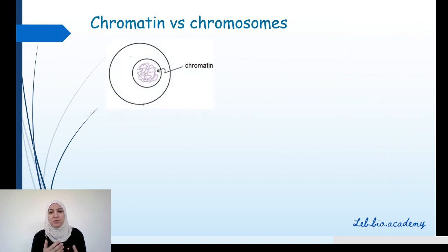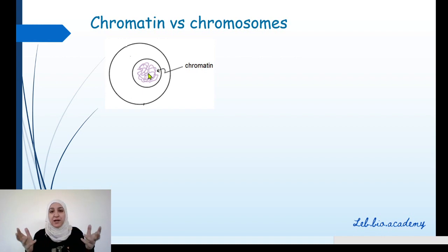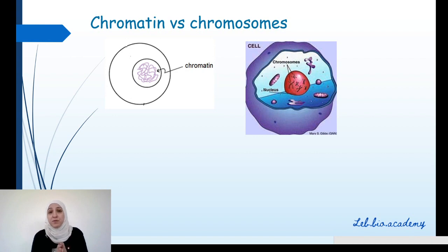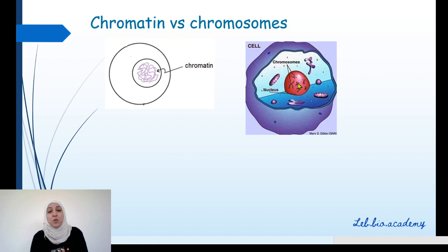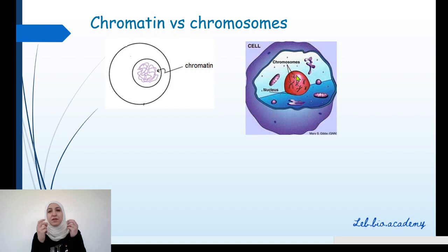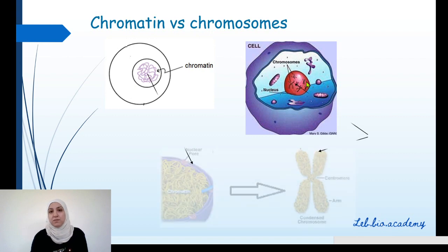Now let's look at chromatin versus chromosomes. Sometimes when you observe cells under the microscope, you may find inside the nucleus thin filaments, known as chromatin. Other times, if you observe the same type of cell at a different time, you will find inside the nucleus what we call chromosomes — thick and condensed structures.